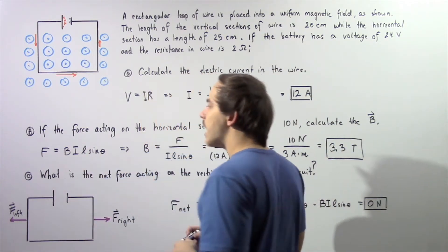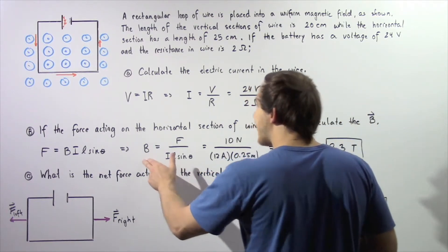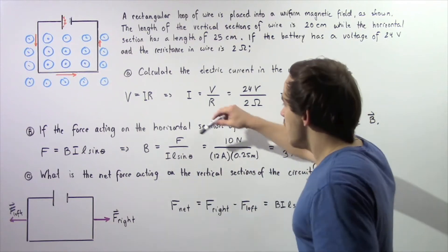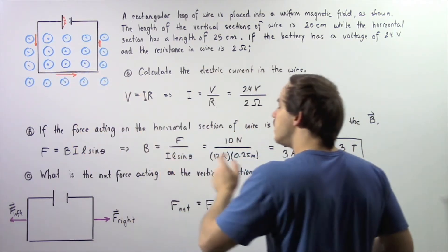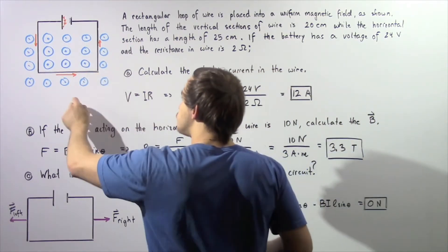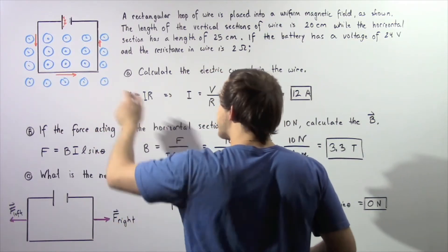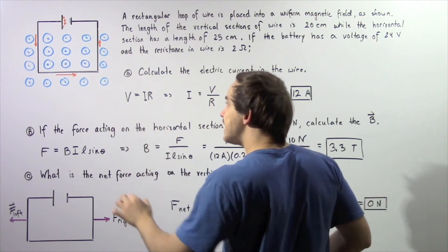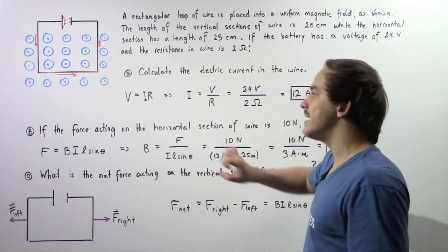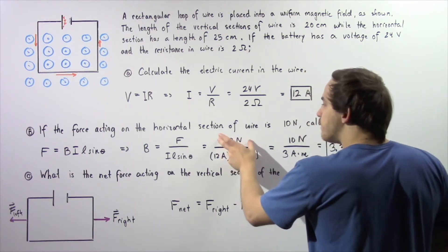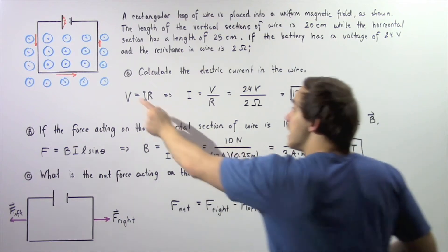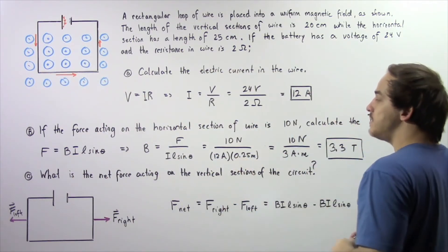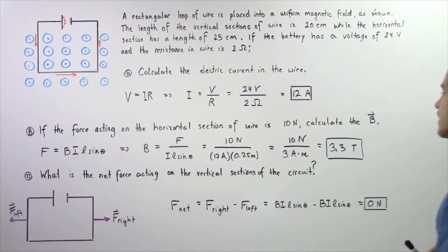The magnetic field B is equal to the force acting on the section divided by the electric current I, multiplied by the length of the section L, multiplied by the sine of the angle theta between the wire and the magnetic field. Since the section of the wire is perpendicular to our field, sine of 90 degrees gives us 1. So we have 10 newtons divided by 12 amps multiplied by 0.25 meters, giving us approximately 3.3 teslas as the magnitude of our magnetic field.